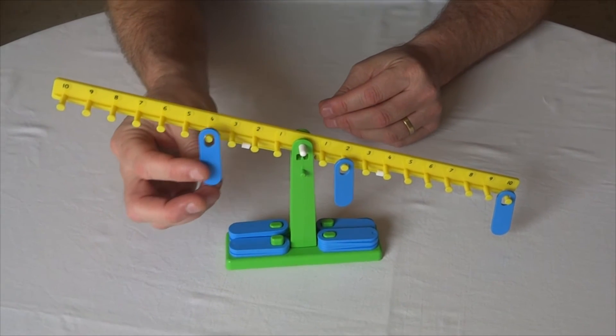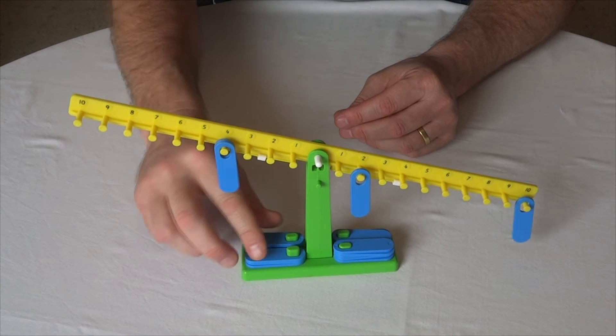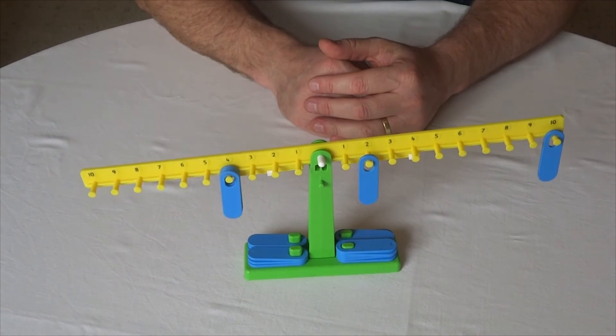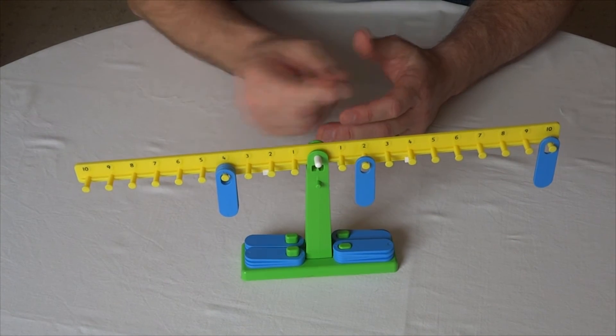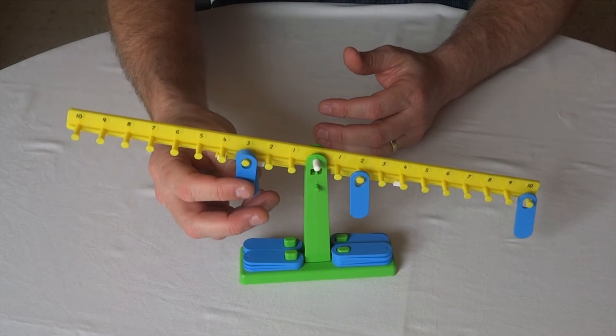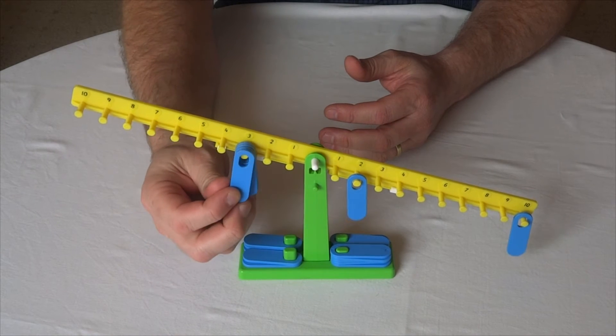Now one way I could balance that would be to have, in this case here, three weights on four because three fours add up. I could change that a little bit. I could put four weights onto the three there and four threes add up, but you know there's another way to show that.